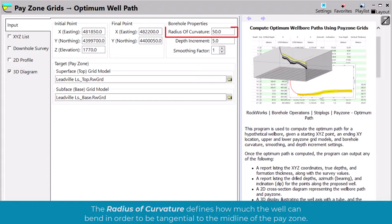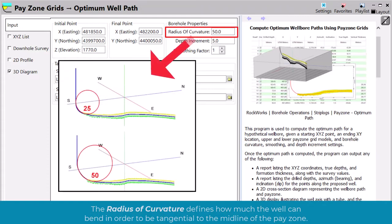The radius of curvature defines how much the well can bend in order to be tangential to the middle of the pay zone.